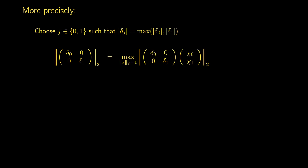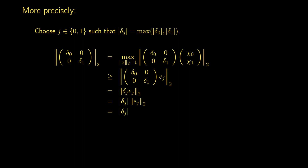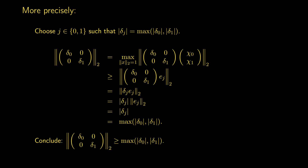To be more precise: let j be the index of the diagonal element that has the maximal absolute value. Then the 2-norm of the diagonal matrix is greater than or equal to the case where we pick the standard basis vector that corresponds to the diagonal element largest in magnitude. Pushing that through, we get the absolute value of that diagonal element, which equals the maximum of the absolute values of the diagonal elements. Therefore the 2-norm is also greater than or equal to that maximum.